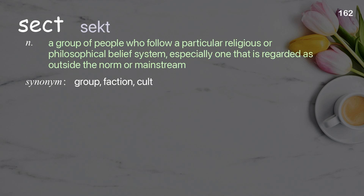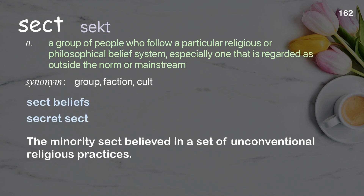Sect: a group of people who follow a particular religious or philosophical belief system, especially one that is regarded as outside the norm or mainstream. Examples: sect beliefs, secret sect. The minority sect believed in a set of unconventional religious practices.